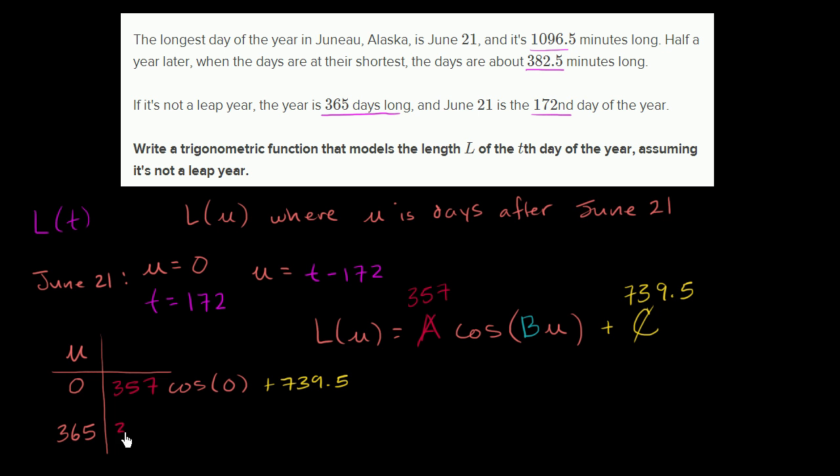So this should essentially be 357 times cosine of 2π. When we were just thinking in terms of a traditional trig function, if we just had a theta in here, you complete a period every 2π. So this should be equivalent to what I'm writing, plus 739.5. Notice this is going to be B times 365.